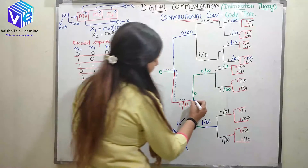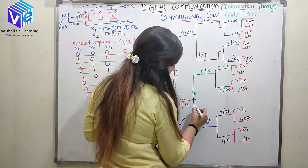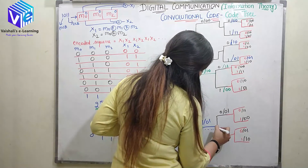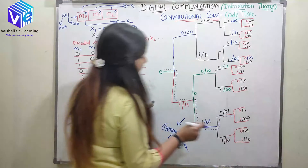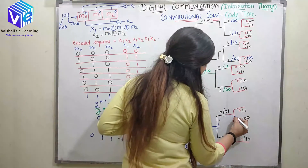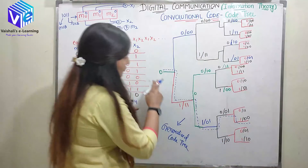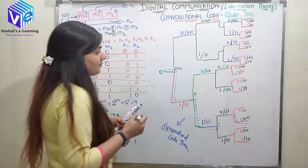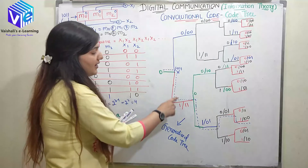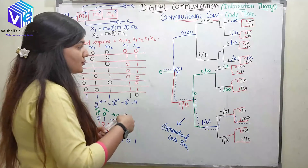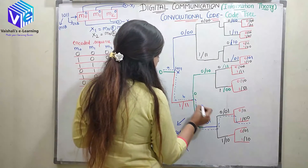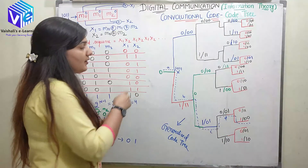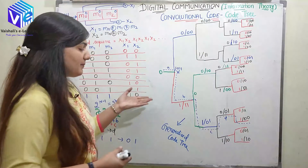After that, the next input is also 1 — this is the LSB — so I again move downward. This traces the code tree for message bit sequence 1011, represented by the dotted line. The path passes through states A, B, C, D. This is how we can represent the code tree of any message sequence using the generalized code tree.